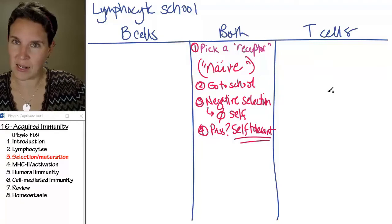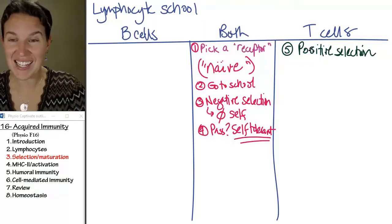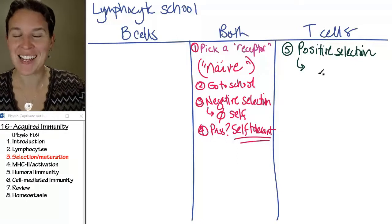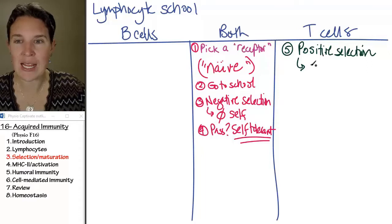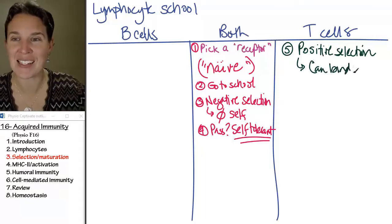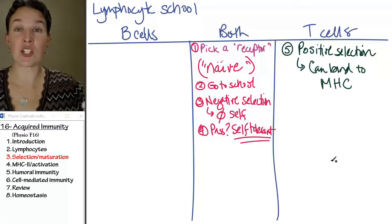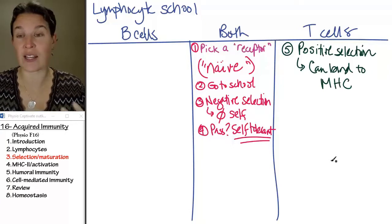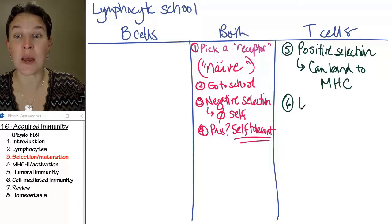T cells don't get to call it the end of the story there. They carry on and have to go to positive selection class. In positive selection class, you check to make sure you can bind to MHC platforms. Some of them need to bind to MHC2 to get activated, and some need to bind to MHC1 to carry out their actual function. If they pass positive selection, then they are considered immunocompetent.